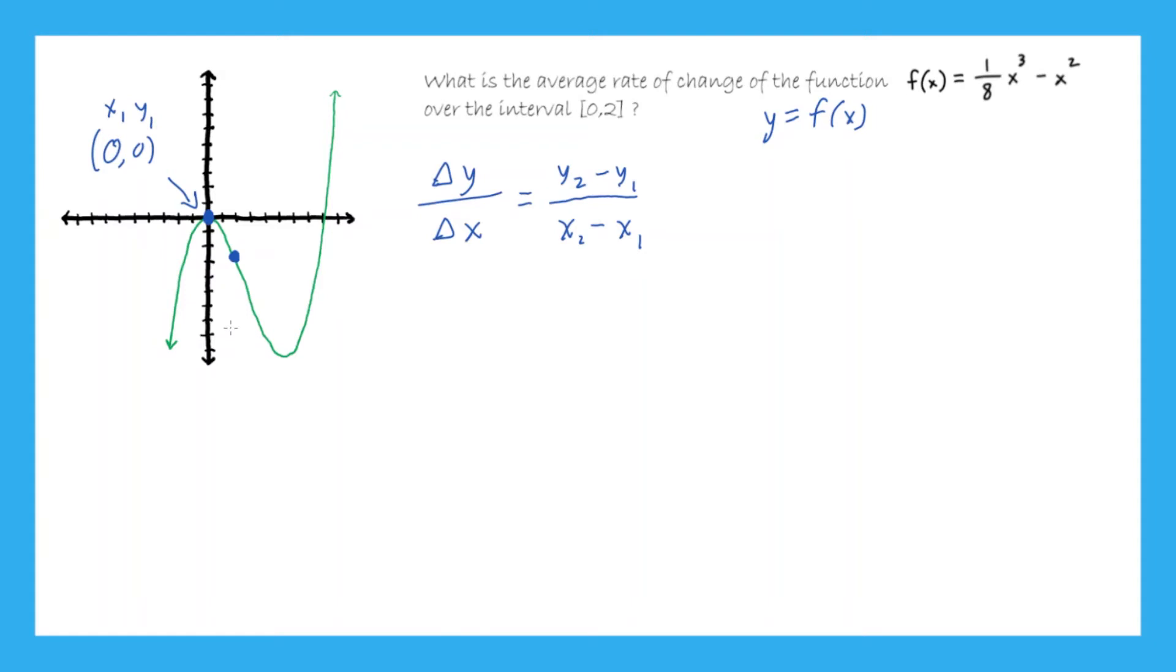And then the second point gives us x2 and y2. In this case, it is 2 to the right, so 2 comma negative 3. So right there, we have x2. And right there, we have y2.